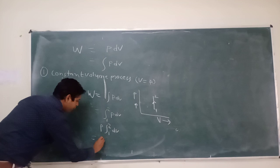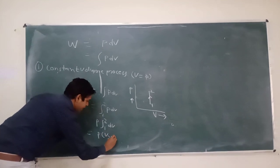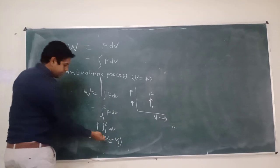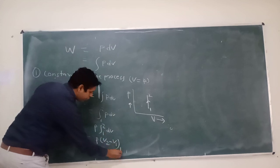The integration part equal to P times V2 minus V1. That is the limit 1 to 2.